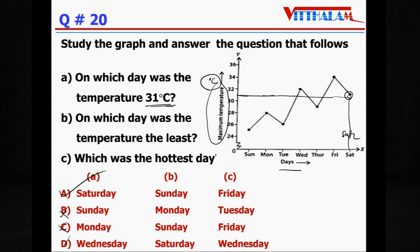On which day was the temperature the least? So that is this, that is on Sunday. Which was the hottest day? So this, that is on Friday. Correct. So answer is A.